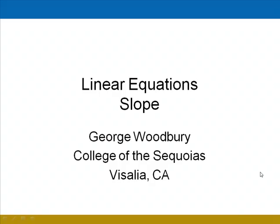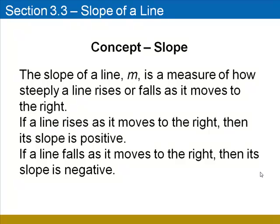Hi, I'm George Woodbury from the College of the Sequoias in Visalia, California, and in this video we'll be talking about the slope of a linear equation. The slope of a line, denoted m, is a measure of how steeply a line rises or falls as it moves to the right. If a line rises as it moves to the right, then its slope is positive, and if it falls as it moves to the right, then its slope is negative.